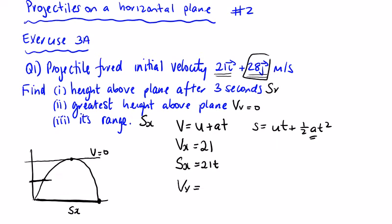V_y: the initial velocity is 28, so V_y = 28 − 9.8t. And s_y = 28t − 4.9t².